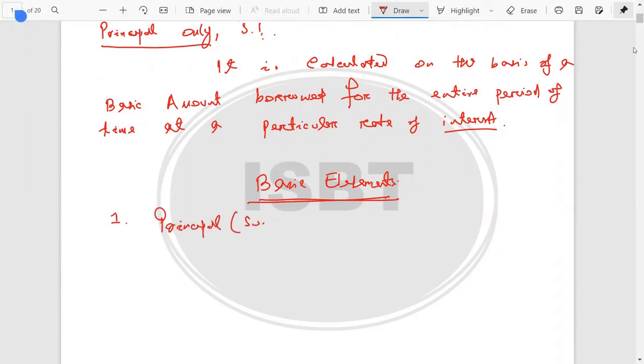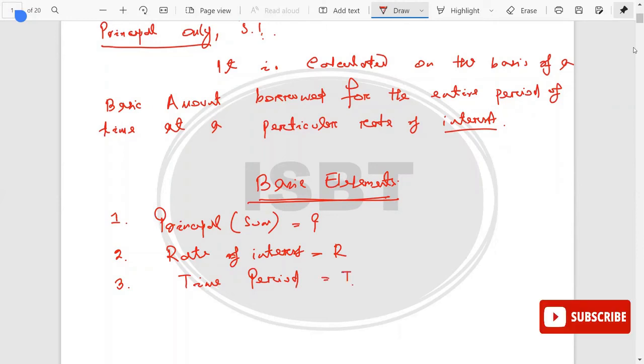To find out the Simple Interest, there are three basic elements that are required. Number one is Principle, that is sum of money, that is P. And number two, the Rate of Interest, that is R. And number three is a particular Time period, that is T.